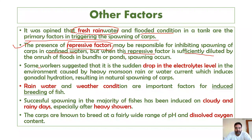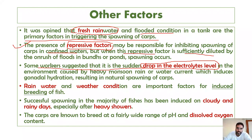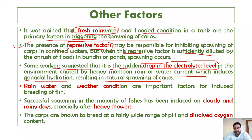Some workers suggested that a sudden drop in electrolyte levels, caused by heavy monsoon, rain, or water current, also induces gonadal hydration resulting in natural spawning of carps. Rainwater and weather conditions are also important factors for the induced breeding of fish. Successful spawning in the majority of fishes has been induced on cloudy and rainy days, especially after heavy showers.